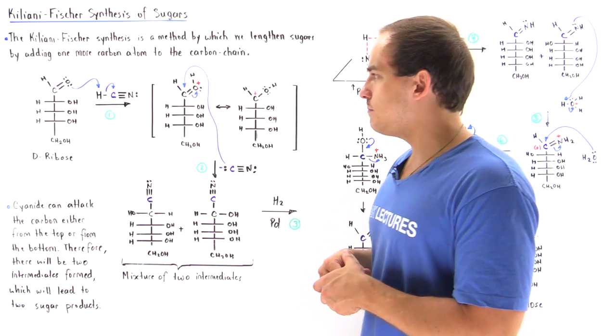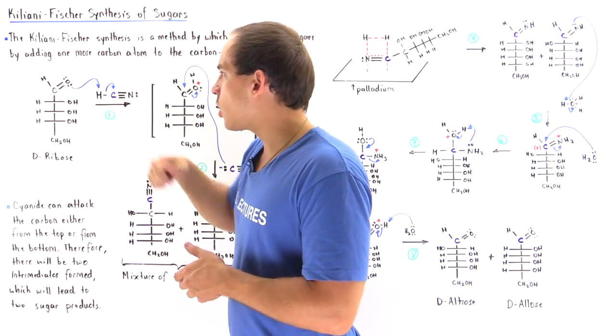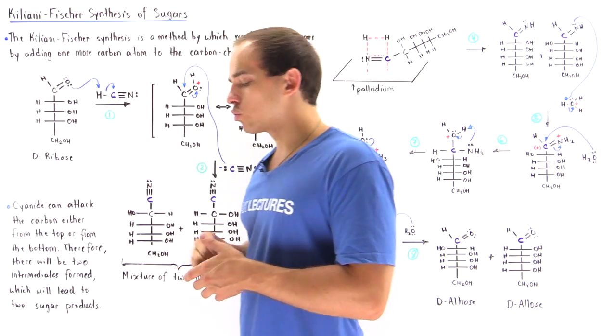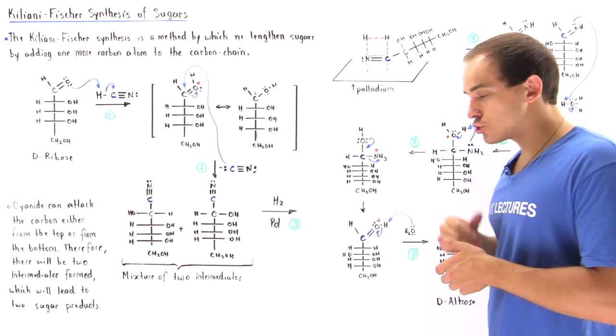An aldopentose simply means we have five carbon atoms, an aldehyde group on one end, and a primary alcohol group on the other end of our sugar chain.